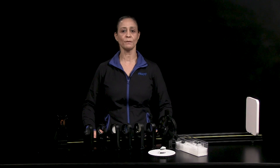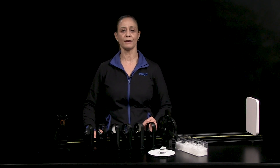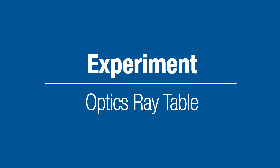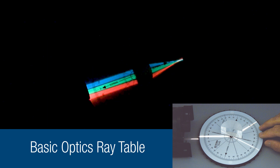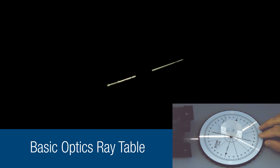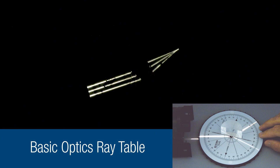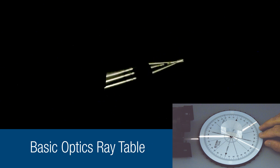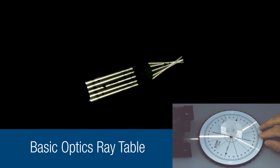Today, I'll be showing you how to demonstrate focal length and refraction using equipment from the PASCO Basic Optics System. Using the Optics Light Source, we can take one beam of light and show how that beam of light is being bent using the Basic Optics Ray Table. We can adjust that to three rays of light to show how light is being bent, and we can also do five.